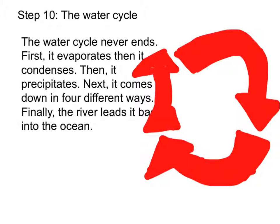Step 10: The water cycle. The water cycle never ends. First, it evaporates, then it condenses, then it precipitates. Next, it comes down in four different ways. Finally, the river leads it back into the ocean.